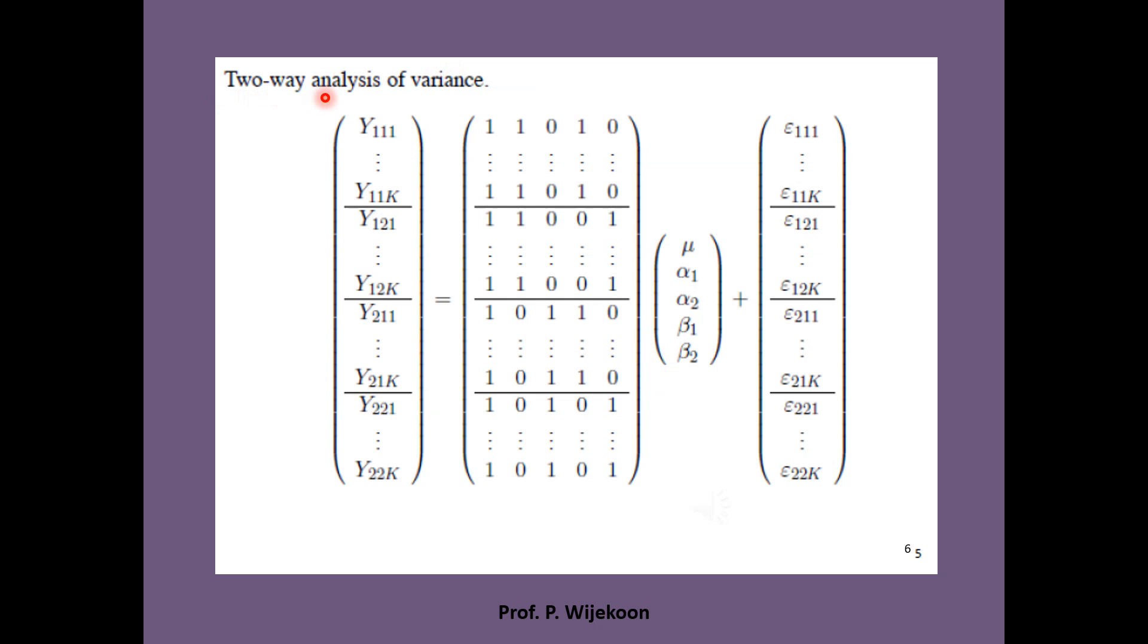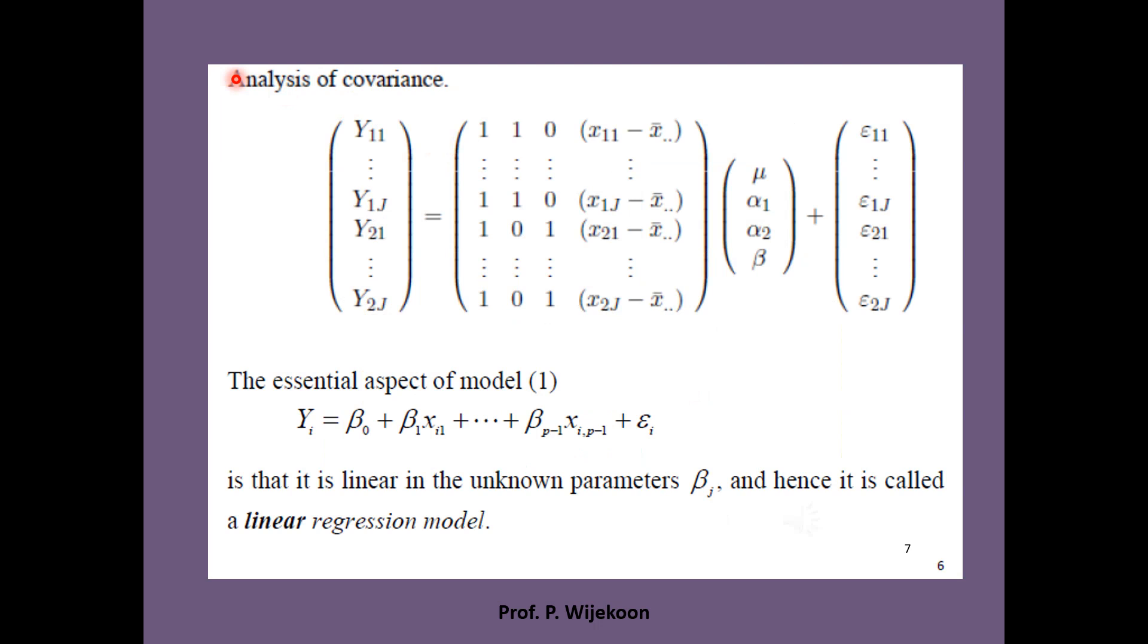Another example that the matrix x is having only zeros and ones is the two-way analysis of variance model. A usual form of such model is given here. In a two-way ANOVA model, there are two factors or two independent variables which compares three or more categorical groups at each factor level.